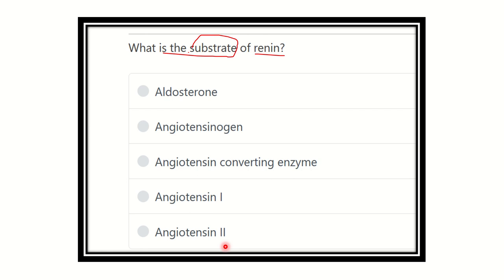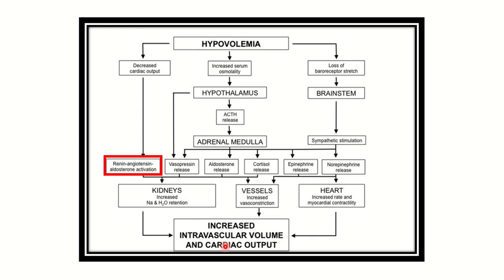We have to find out the substance on which renin acts. Renin is a substance released from the nephron. Due to any event that causes hypovolemia or blood loss, the following mechanism is activated.